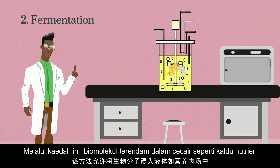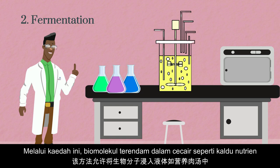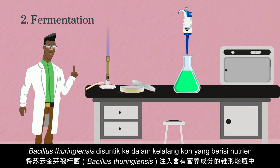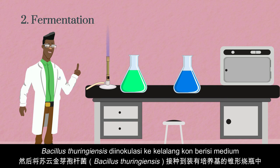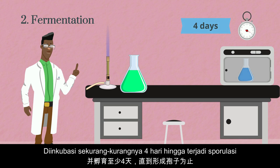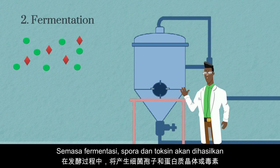This method allows biomolecules such as enzymes and other reactive compounds to be submerged in a liquid such as nutrient broth. The fermentation process started by inoculating a small amount of a Bacillus thuringiensis colony grown on a nutrient agar slant into a conical flask containing nutrient broth, then incubated overnight. This activated Bacillus thuringiensis was then inoculated into a conical flask containing medium with desired moisture content and incubated for at least four days until sporulation had occurred. During fermentation, bacterial spores and crystalline toxins are produced.